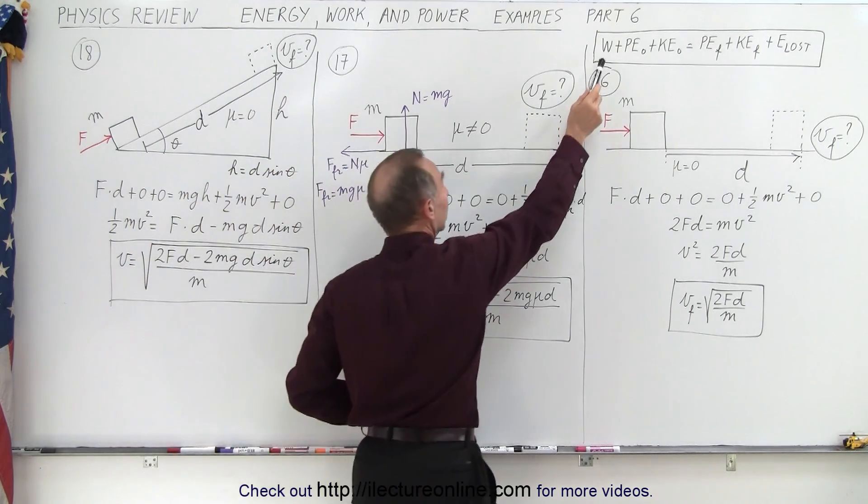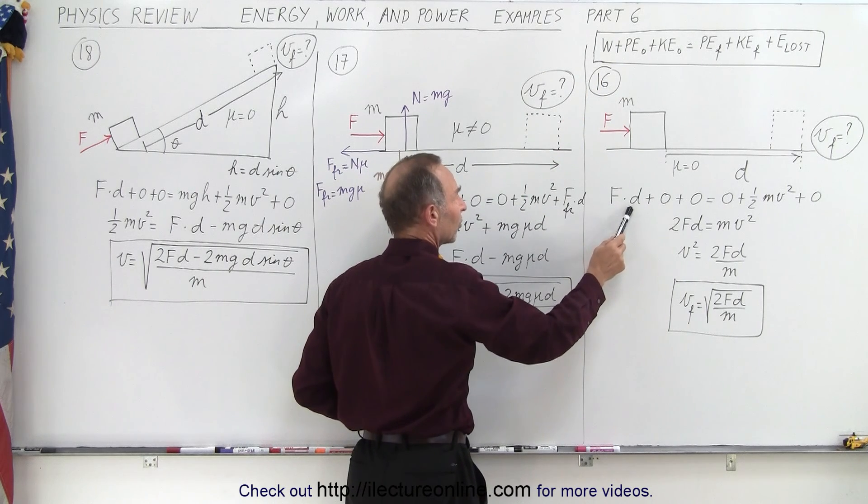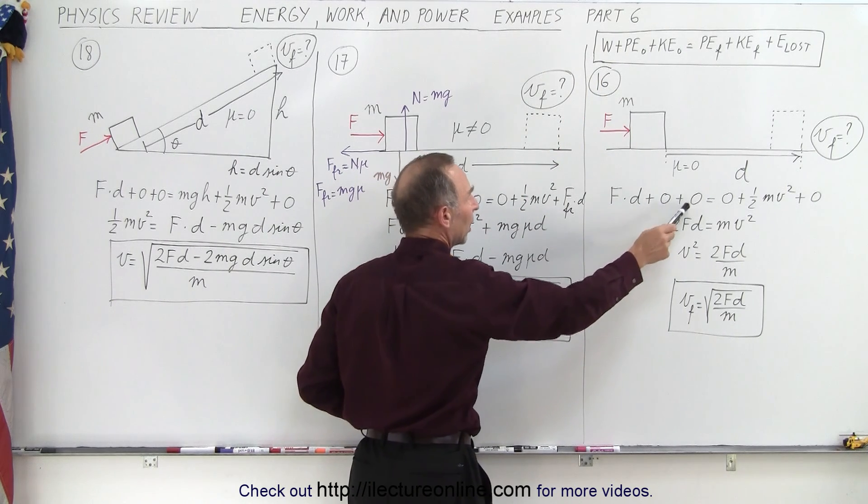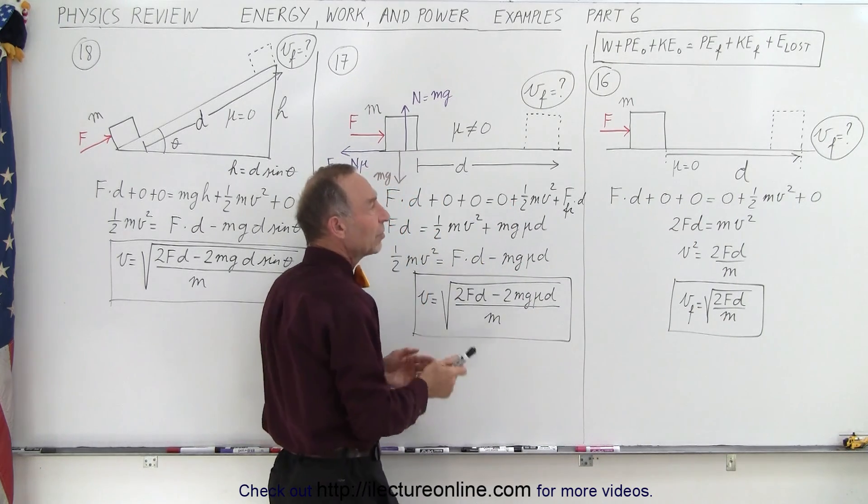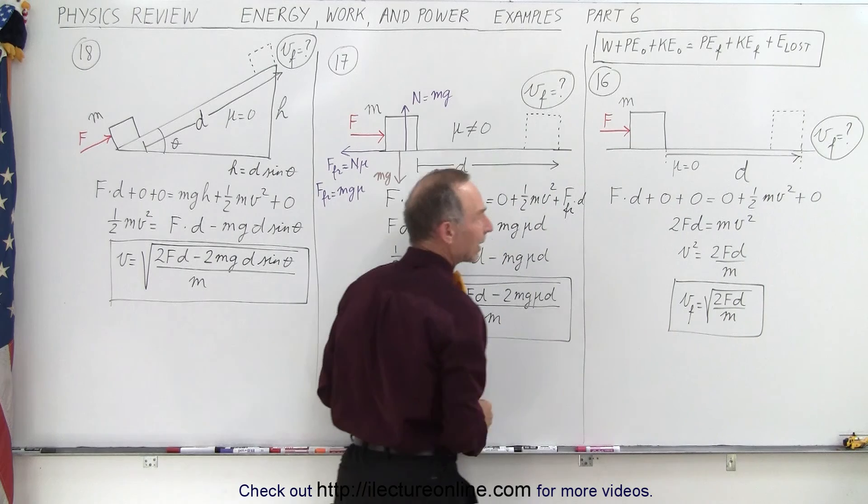So here you can see that we have work put into the system, which is force times distance. No initial potential energy and no initial kinetic energy. We have no final potential energy because no height is gained, but we do have final kinetic energy.